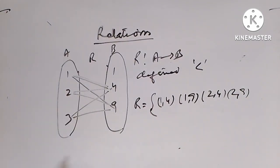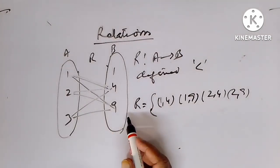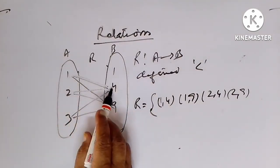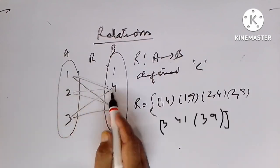We have a set A and B containing 1, 2, 3 and 1, 4, 9, and what we see is that each member of set B is a square of the corresponding member of A. We have defined relation R from A to B defined by less than. So we can write R as {(1,4), (1,9), (2,4), (2,9), (3,4), (3,9)}. So this is the set.